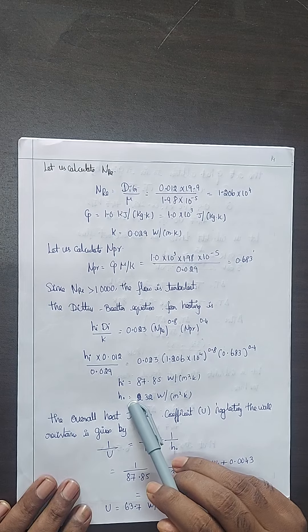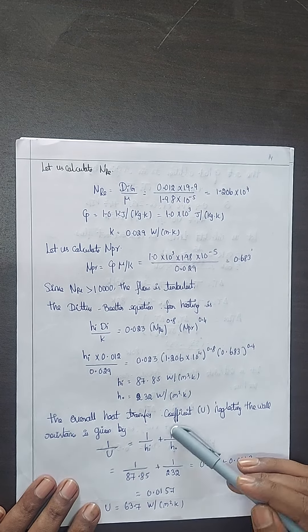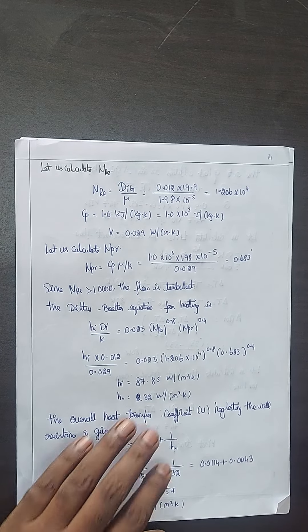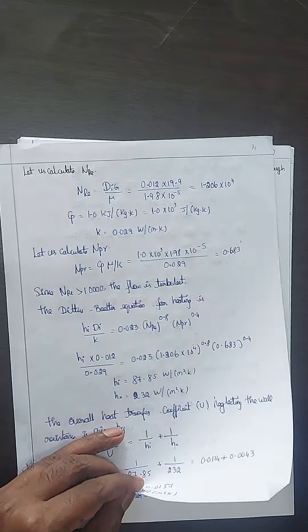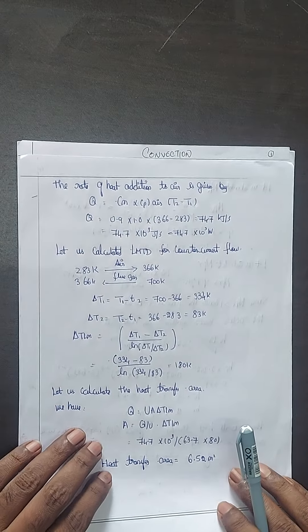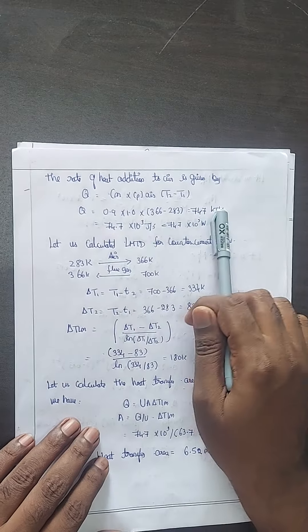Calculate hi, then 1 by U equals 1 by hi plus 1 by ho. Q equals m Cp delta T formula.